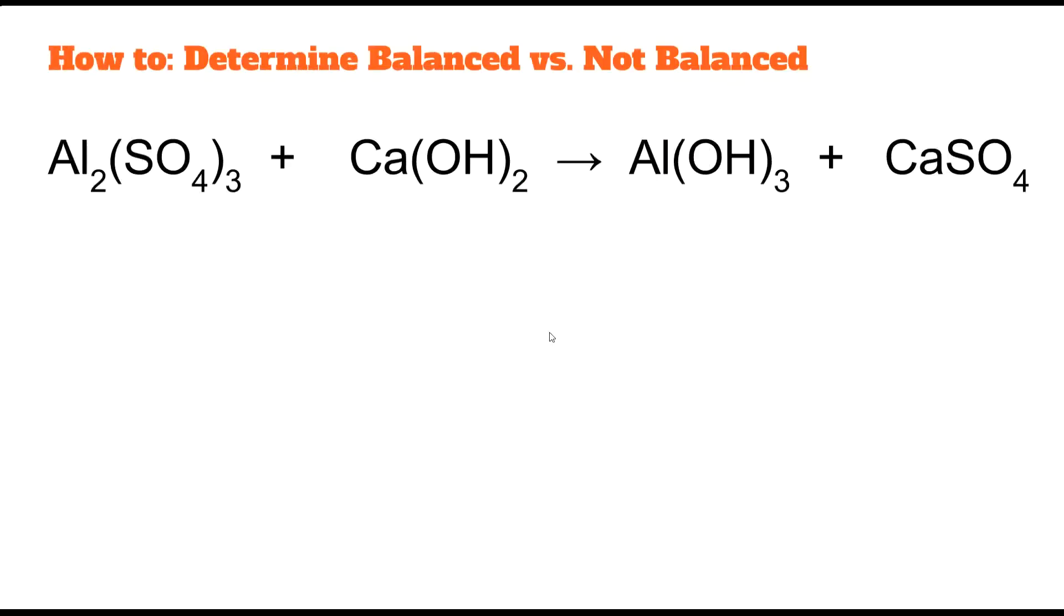Our final example is a little bit longer. So you might need to pause the video to record it. Again, we're going to put a straight line down right by the yield sign. Let's go to the reactant side and write down everything we have. We have aluminum. That's pretty apparent. We have calcium.